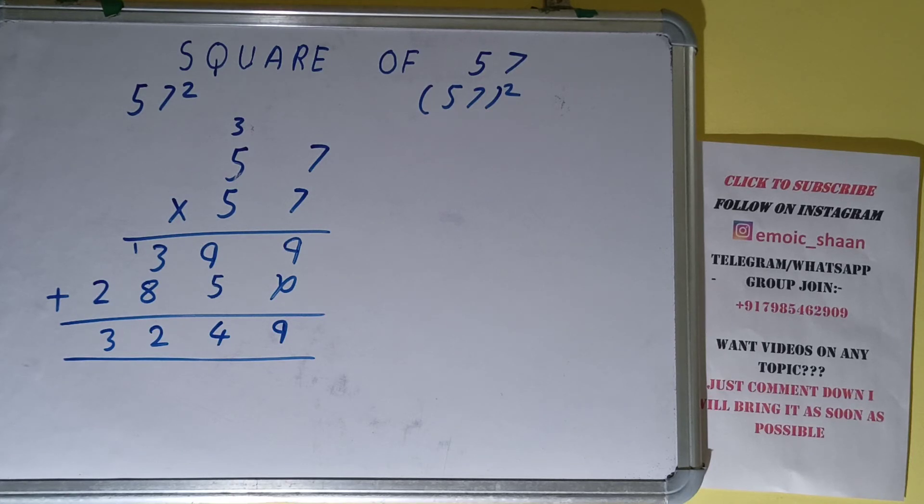We can also say that the square of the number 57 is 3249, and this was all. So if you found the video helpful, please hit the like button, consider subscribing, and thanks for watching.